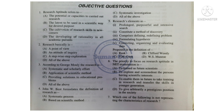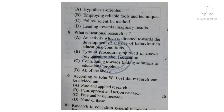Question 7: Which one of the following is NOT representing the characteristics of research? Option A: Hypothesis oriented. Option B: Employing reliable tools and techniques. Option C: Follow scientific method. Option D: Leading towards imaginary results. Answer is Option D: Leading towards imaginary results.